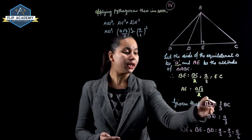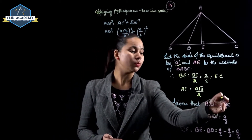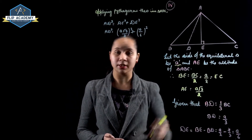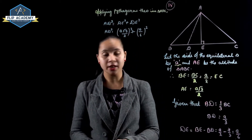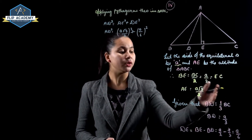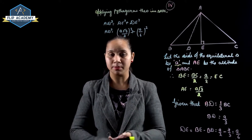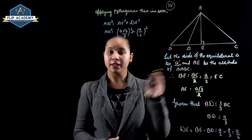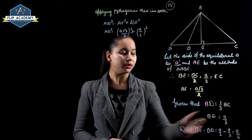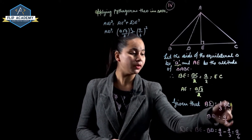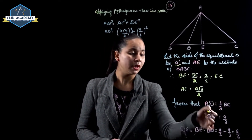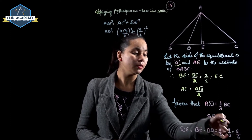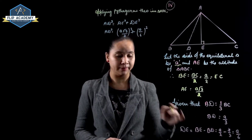Given that BD is equal to 1/3 BC. Since BC value is A, we get BD is equal to A/3.